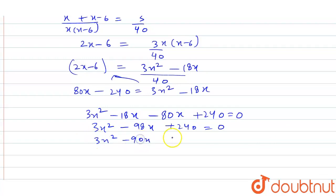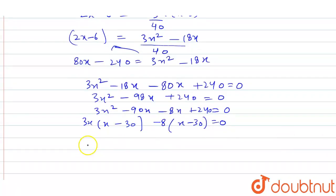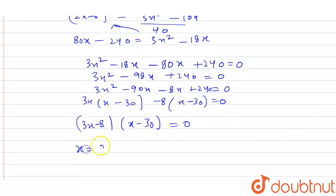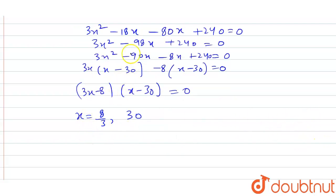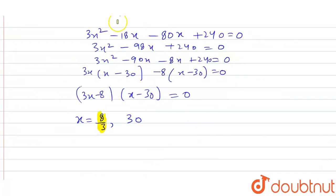Solving this, we get 3x squared minus 98x plus 240 equals 0. Factoring: (3x minus 8)(x minus 30) equals 0. So the value of x is 8 by 3 or 30. If x is 8 by 3, that is approximately 2-point-something, then x minus 6 will be negative, so A would not exist. Therefore the answer is x equal to 30.